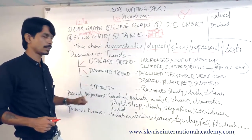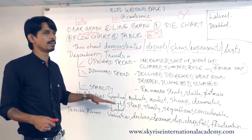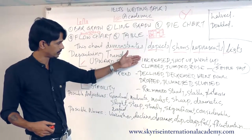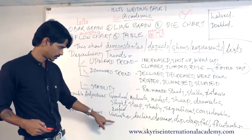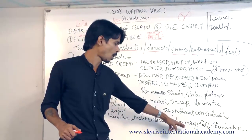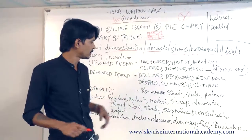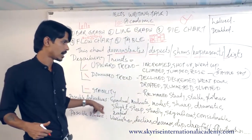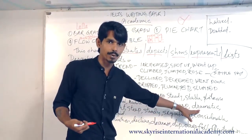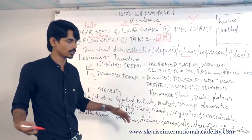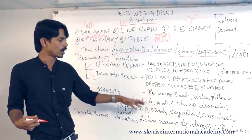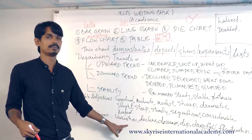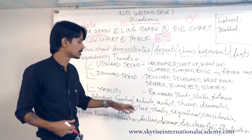Then there are adjectives you can use to describe certain trends. For example, 'gradual' is an adjective — you say 'a gradual increase' or 'a gradual decline.' When using adjectives like these, you pair them with nouns: gradual decrease, moderate drop, modest increase, sharp increase, or dramatic drop in sales or in the supply of any commodities. It is important that you use an adjective followed by a noun — that is the correct way to frame such sentences.